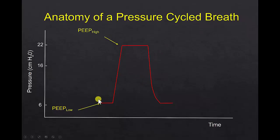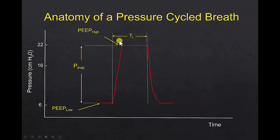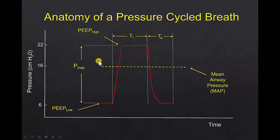In a pressure-cycled breath, the PEEP low is set, then we either set the target pressure as PEEP high, or set the inspiratory pressure above PEEP to achieve the PEEP high. Either way, PEEP high equals PEEP low plus the inspiratory pressure. We also set the inspiratory time and rate, which fixes the I:E ratio. In this example, the inspiratory time is higher than the expiratory time and uses a square wave, so the mean airway pressure of 16 is much closer to 22 than in the prior example, because the pressure is held at 22 for the entire duration of inhalation.